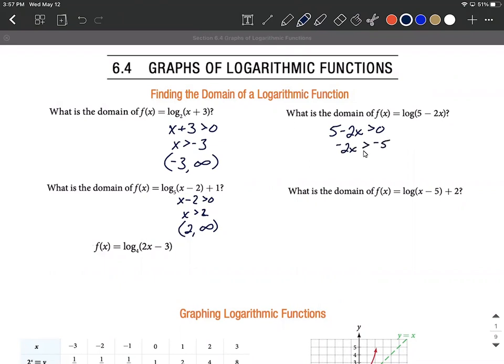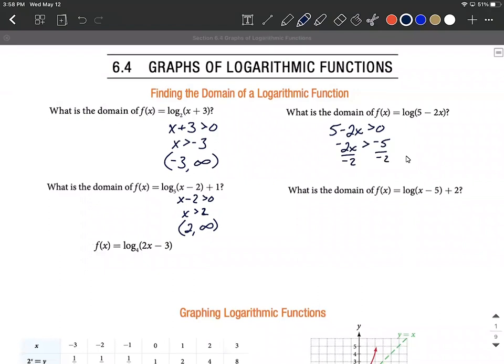Subtracting something won't change the sign on our inequality, but then we need to divide by negative two to get x all by itself. As we divide or multiply by a negative, that's going to switch the sign on our inequality. So it goes from greater than sign to a less than sign. And we have five halves or 2.5 on the right hand side. As an interval, this is going to go negative infinity to five halves, leave out both of the ends.